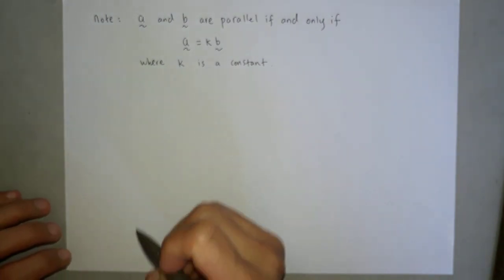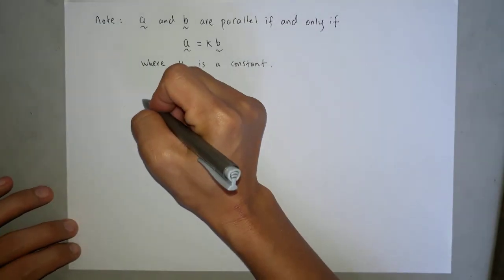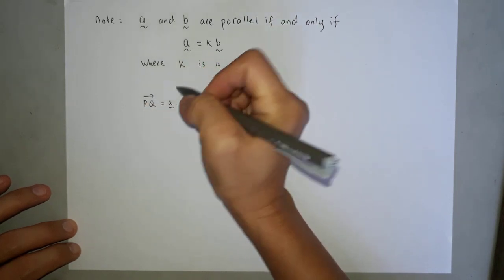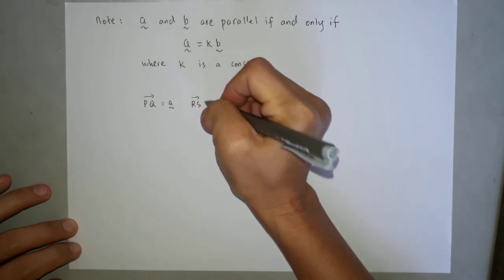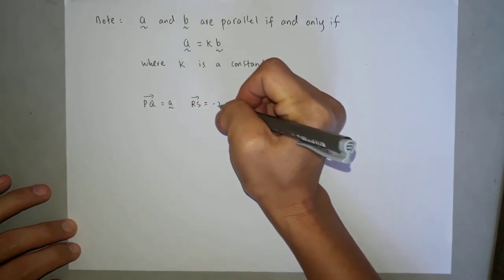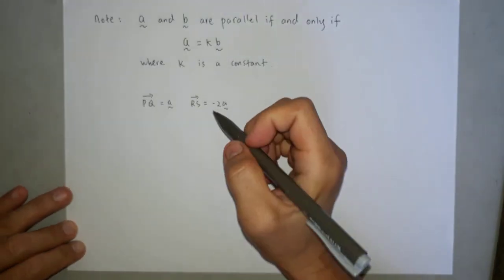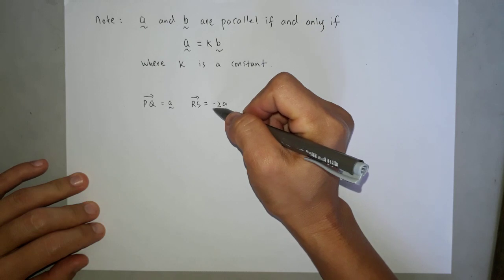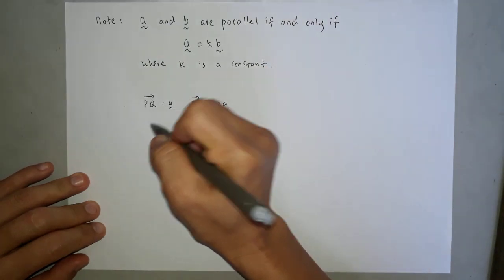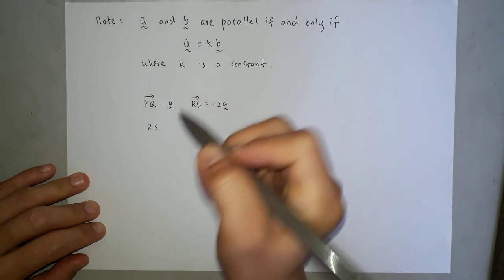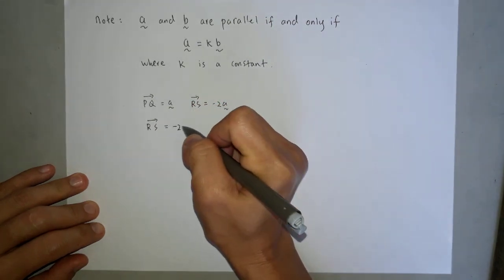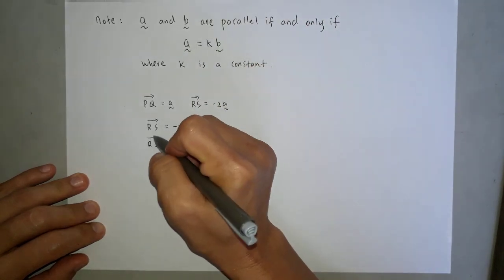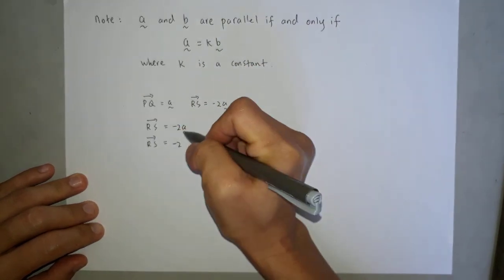Now I want to show BQ. Vector BQ equals to A. Vector RS equals to negative 2A. I want to show these two vectors are parallel. Then I will choose the one with the constant. I will write down RS equals to negative 2A vector A, and then I replace negative 2A.